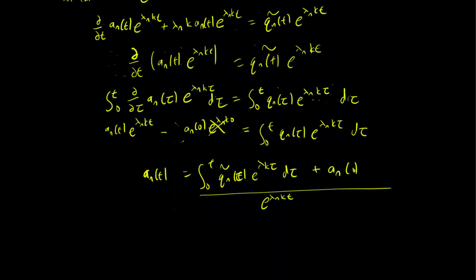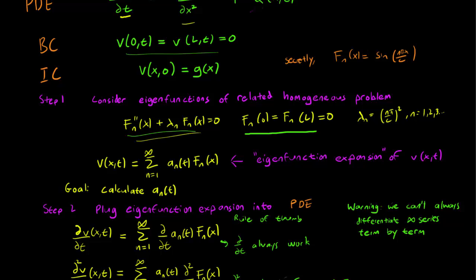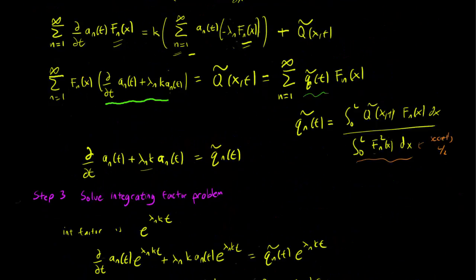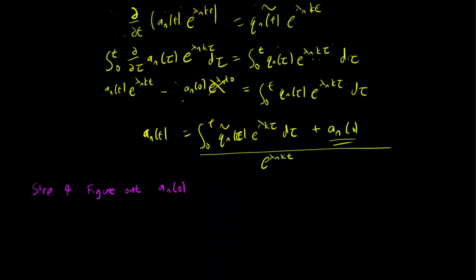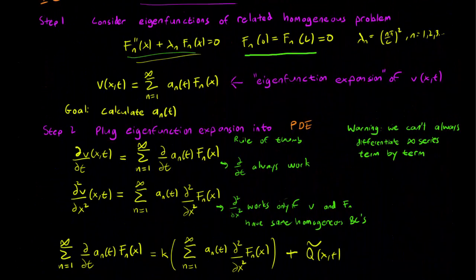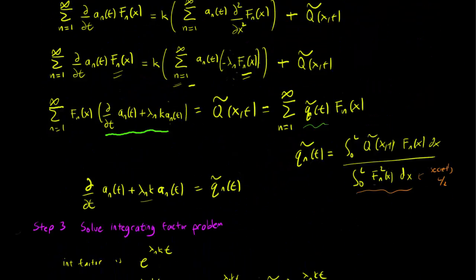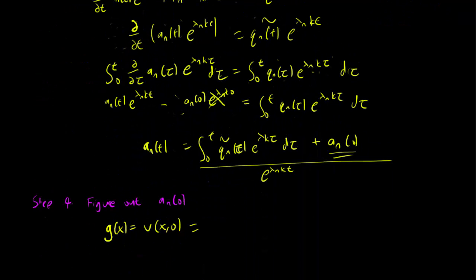And we're just about done, except we first need to figure out what a_n(0) is. But that's pretty straightforward. This comes from our initial condition. So we have g(x) equals V(x,0), plugging in t equals 0. And we simply look at our eigenfunction expansion again. This is our eigenfunction expansion, plugging in t equals 0. That's just going to be equal to sum n equals 1 to infinity of a_n(0)*F_n(x).